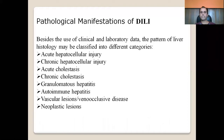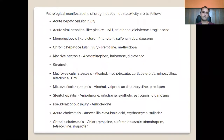Regarding pathological manifestations, besides clinical and lab data, the pattern of histology may be classified into different categories: acute or chronic hepatocellular injury, acute or chronic cholestasis, granulomatous or autoimmune hepatitis, vascular lesions, veno-occlusive disease, and neoplastic lesions. These pathological manifestations have been linked with the specific drugs that cause them.